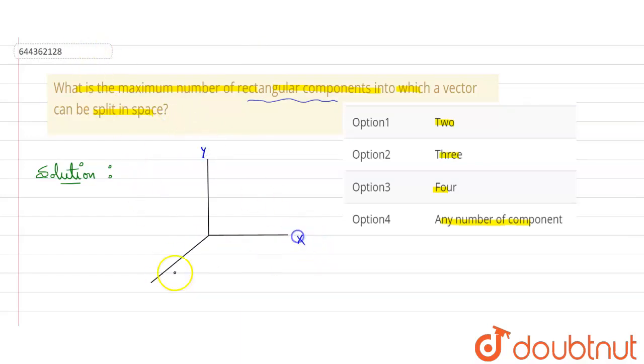So rectangular component, or we can say orthogonal component, both are the same. It means all the three dimensions, that is x, y, and z. Here we have to represent a vector.